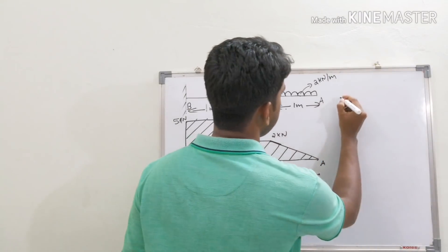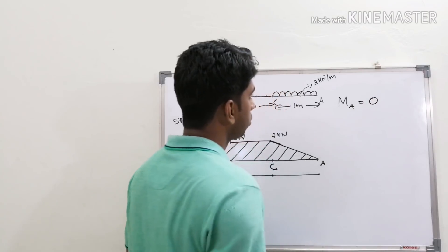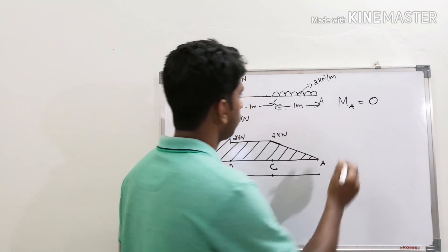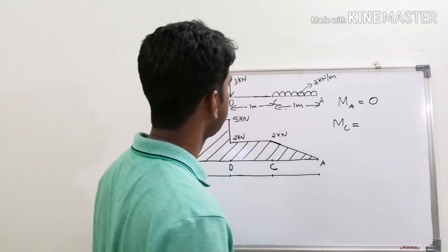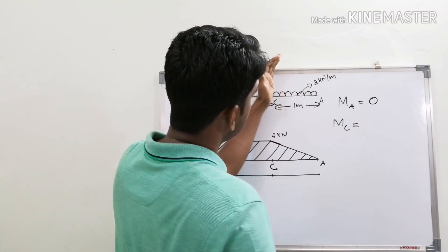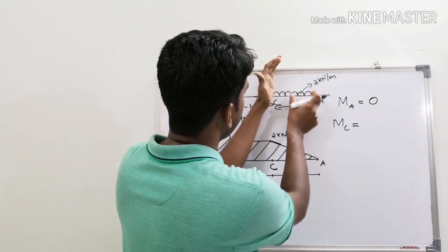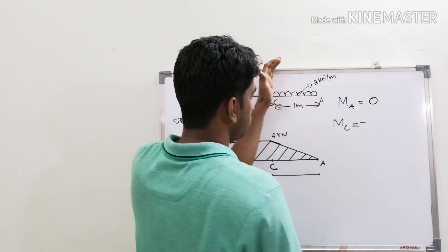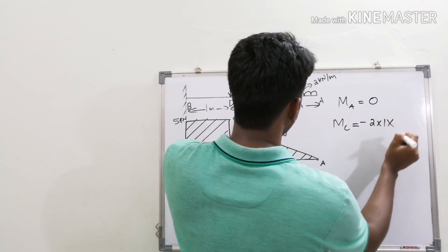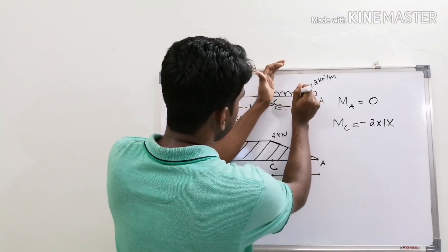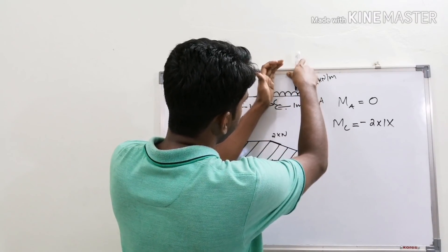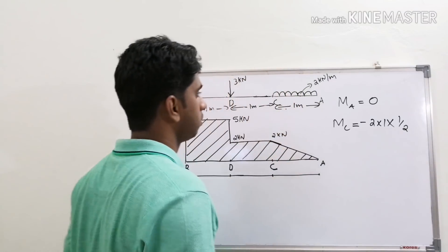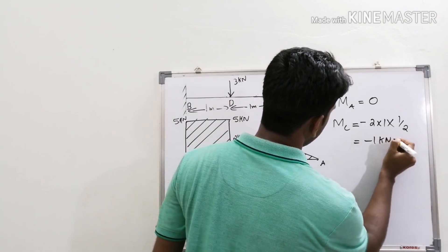We start from the right side. Moment at A is zero because there is no loading to the right of A. For moment at C, we consider all forces to the right of C. We have a UDL over a span of 1 meter; it creates a hogging moment so we apply a negative sign: −2 × 1 × 0.5 = −1 kN·m. So the bending moment at C is −1 kN·m.